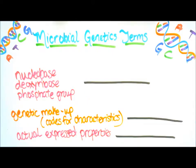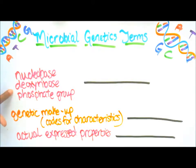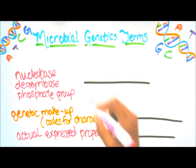Here's the next set: we have nucleobase, we have deoxyribose, and phosphate group — and it is a structure — and it's called a nucleotide.